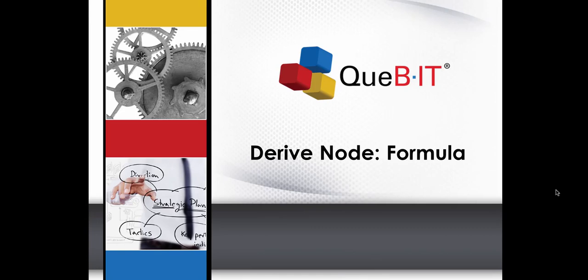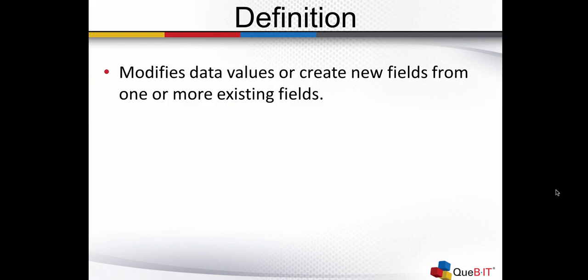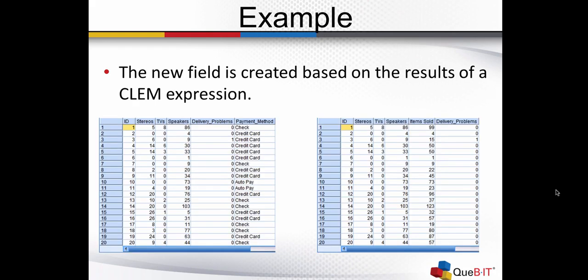Let's talk about the Derive node. The Derive node offers six methods to create a new field. In this video, we're going to talk about using the Derive node as a formula. The Derive node is located in the FieldOps palette. This node allows you to modify data values or to create new fields from one or more existing fields. When you use the Derive node as a formula, it allows you to create a new field that's based on the results of a Clem expression.